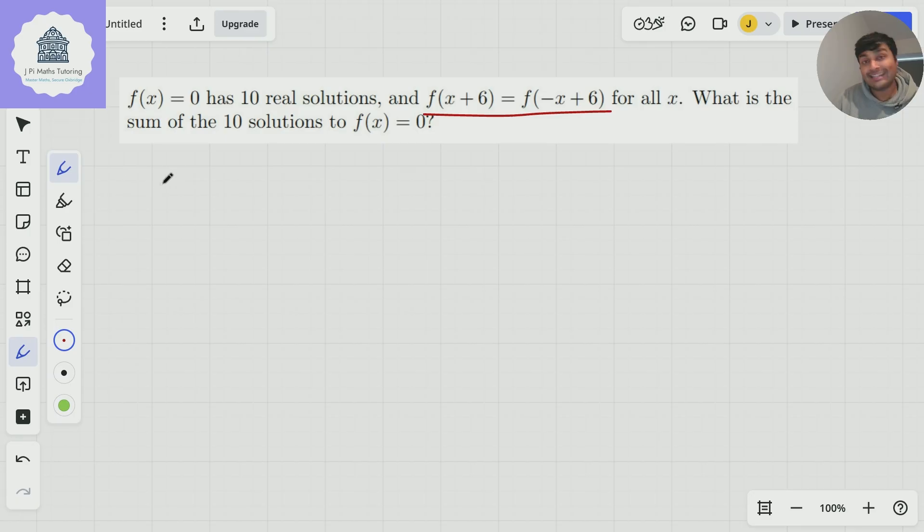Well, I'm going to write down a claim and then prove this claim. So y equals g of x has a line of symmetry at x equals alpha, where alpha is a constant, if and only if g of x plus alpha is the same as g of alpha minus x for all real numbers x.